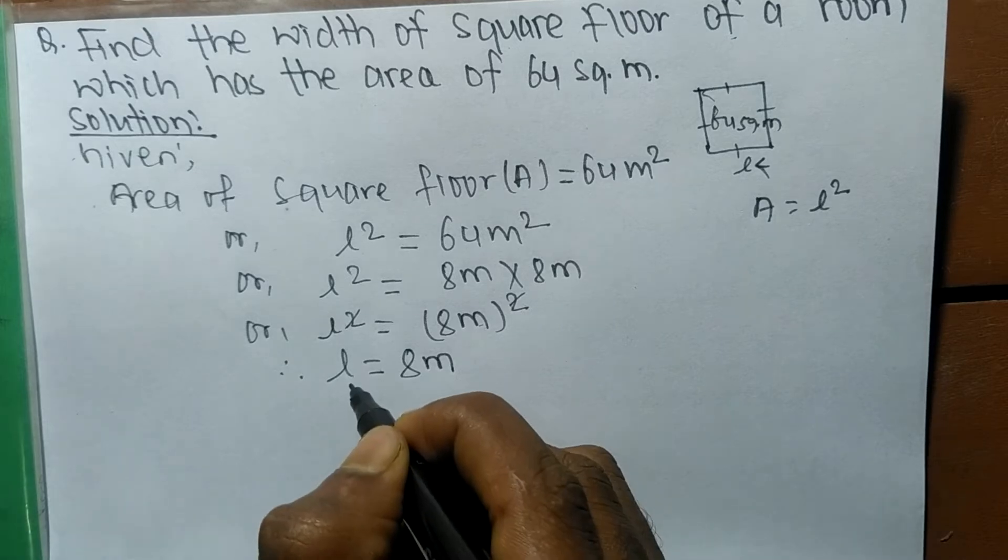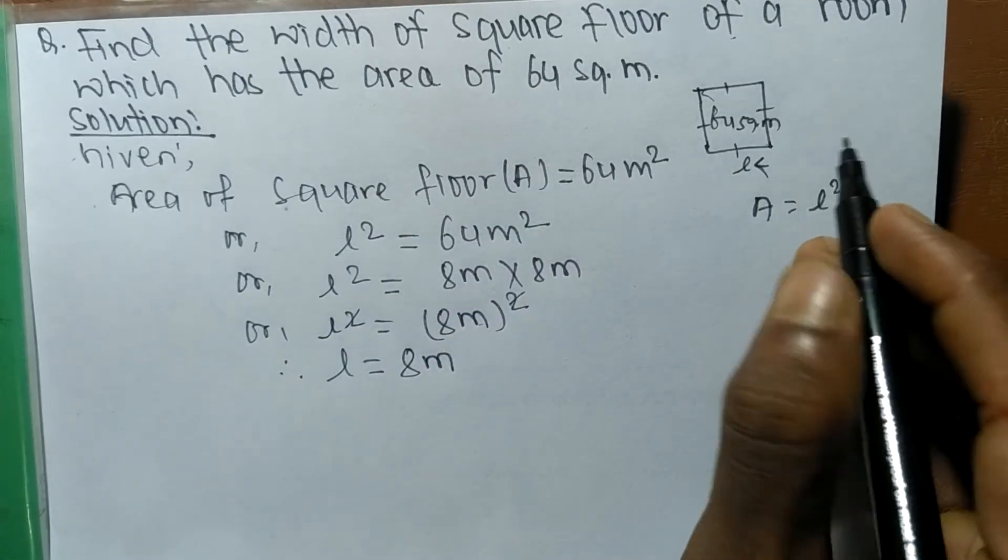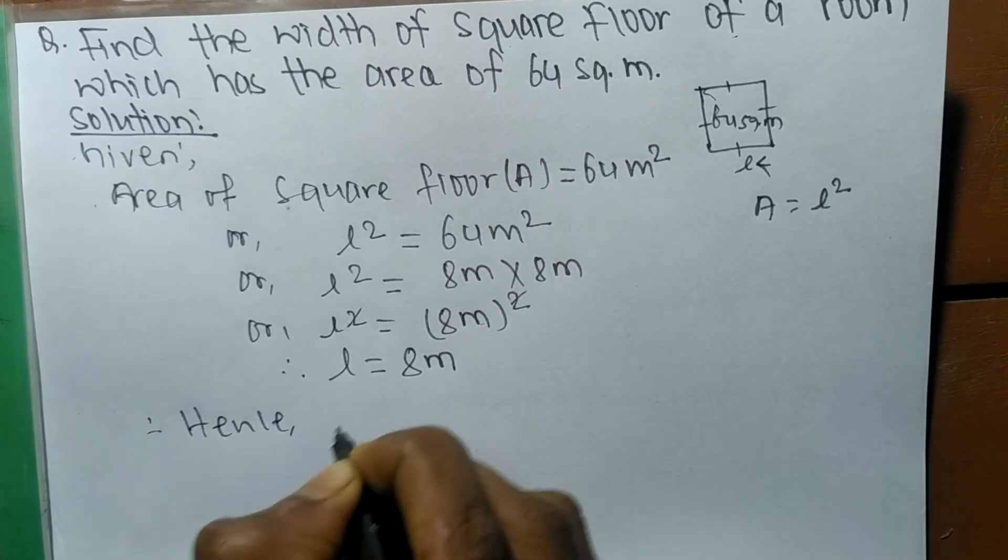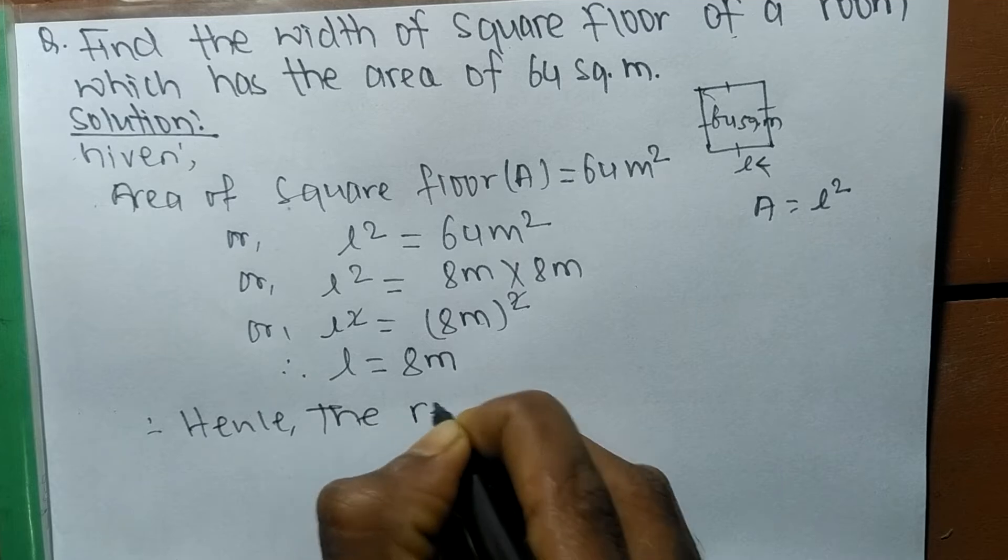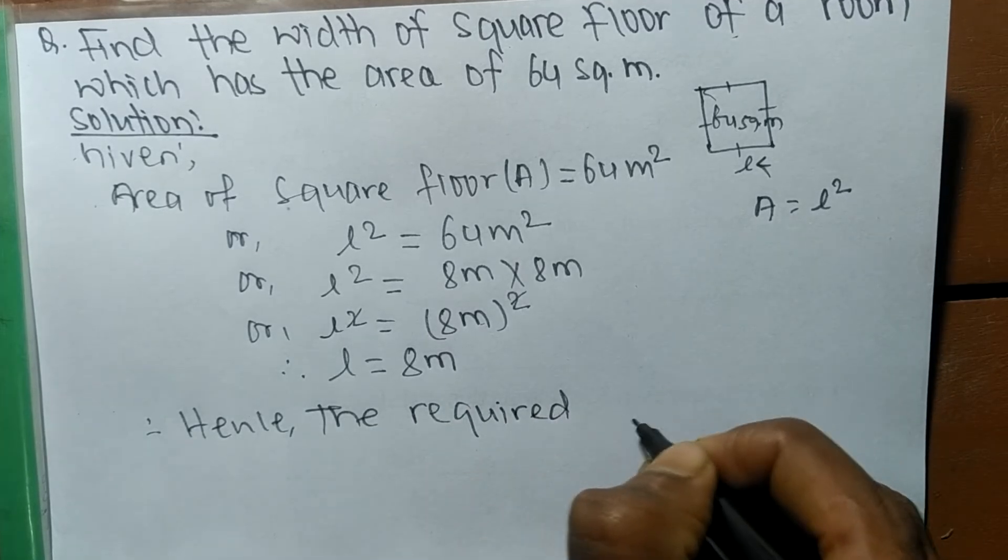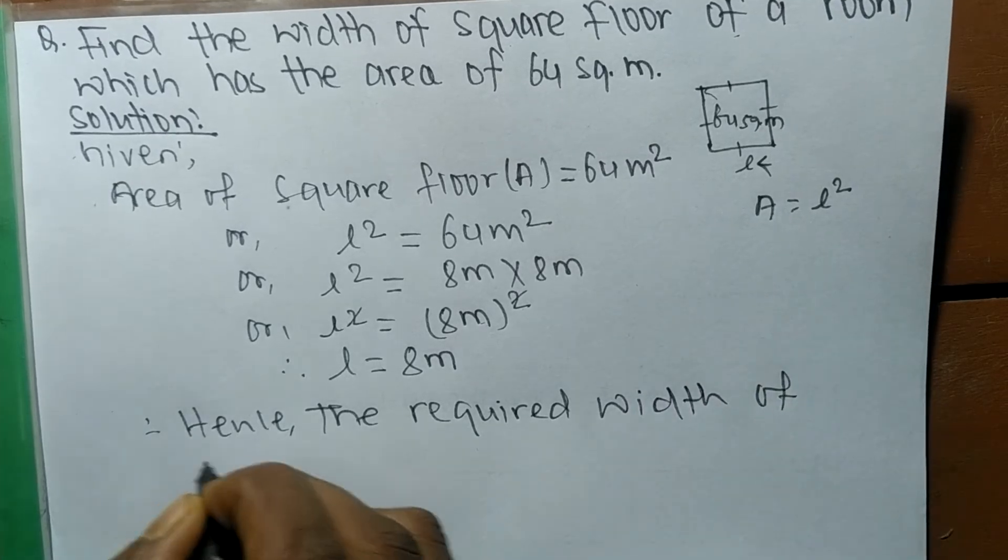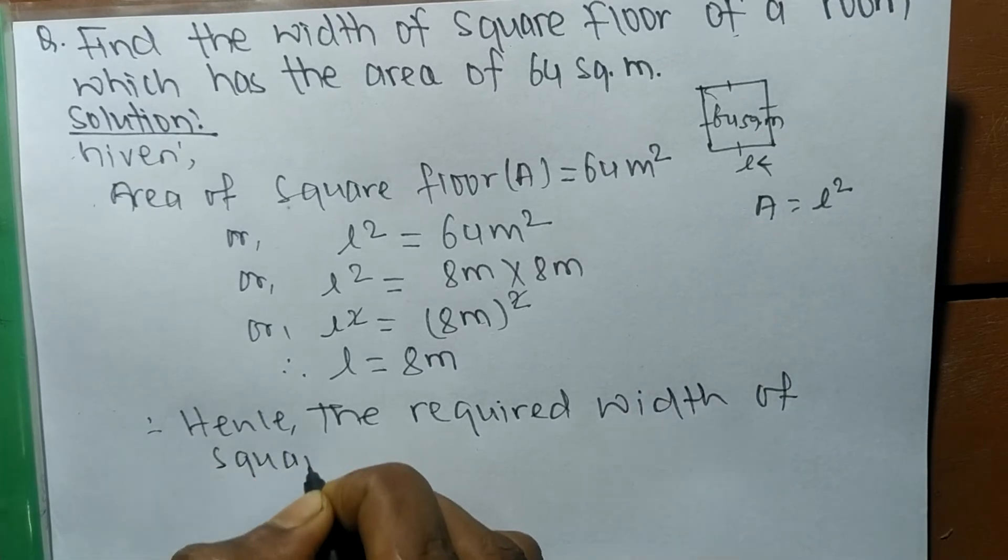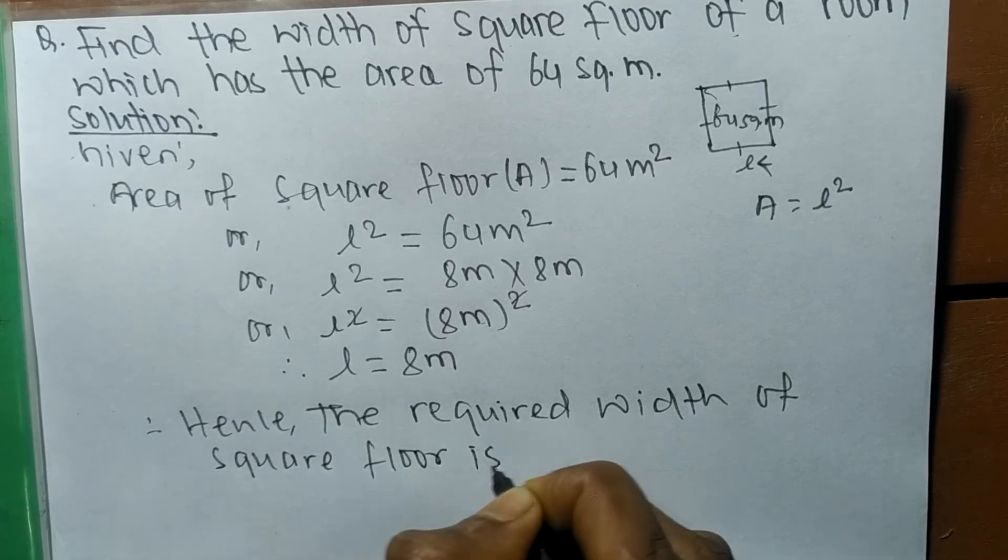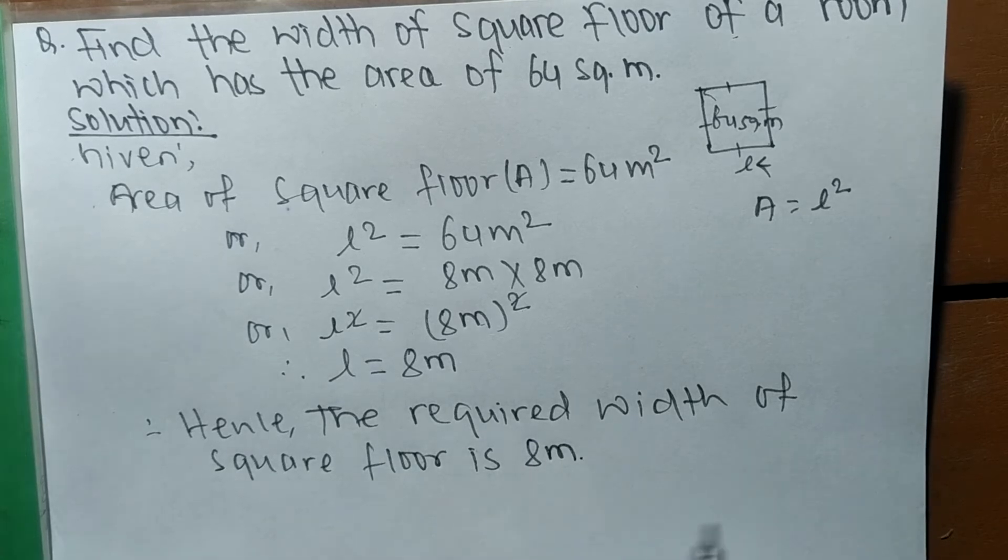Hence, the required width of square floor is 8 meter.